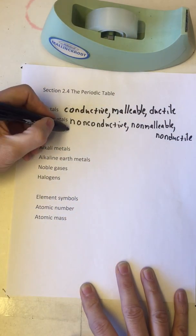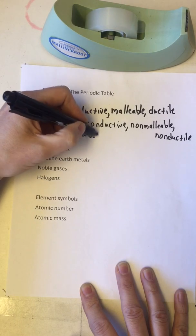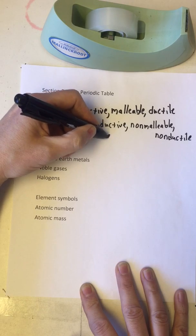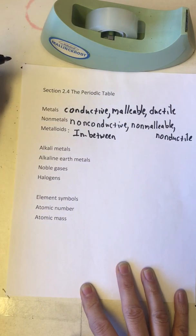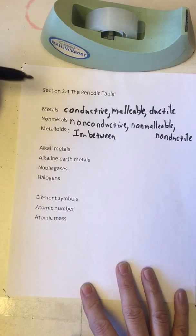Metalloids are in between, so they sometimes conduct electricity but not as well as a conductor. They can on occasion be made into wires but it's more difficult with them.